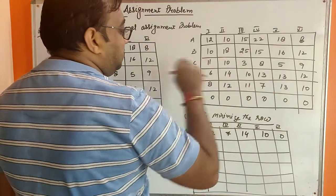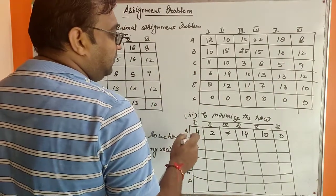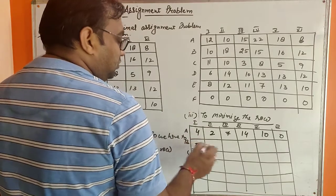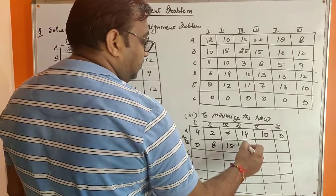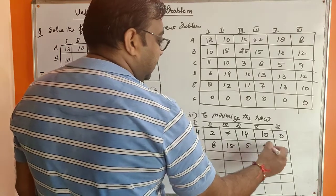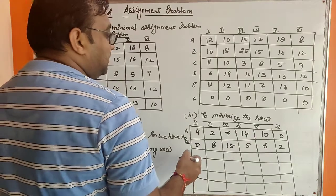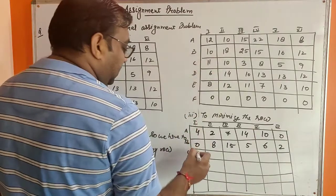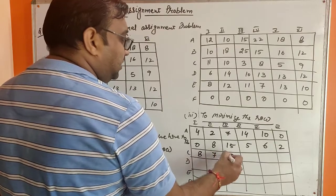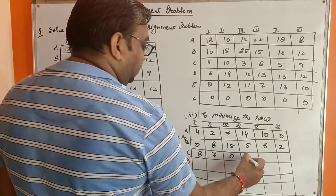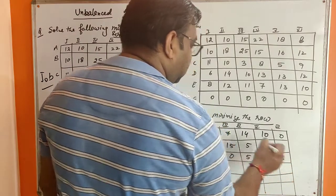In the second row, the minimum element is 10, so we subtract 10 from each element, giving: 0, 8, 15, 5, 6, and 2. In the third row, the minimum element is 3, so subtracting: 11−3=8, 10−3=7, 3−3=0, 8−3=5, 5−3=2, and 9−3=6.